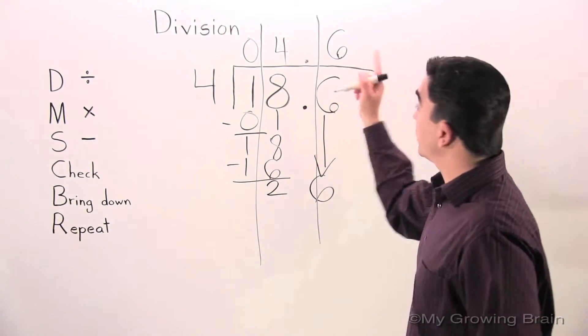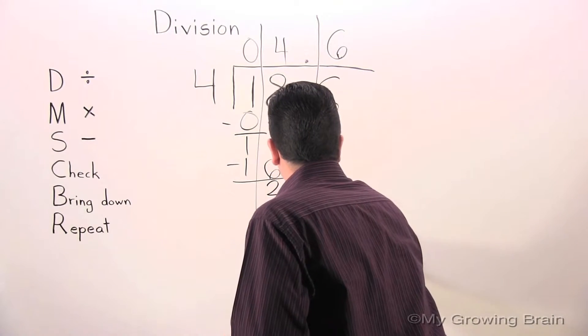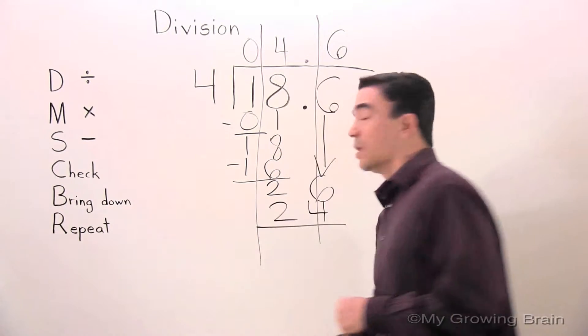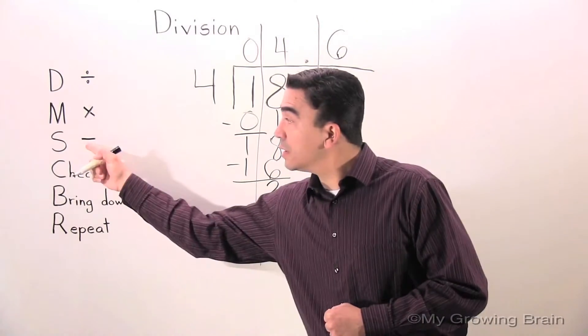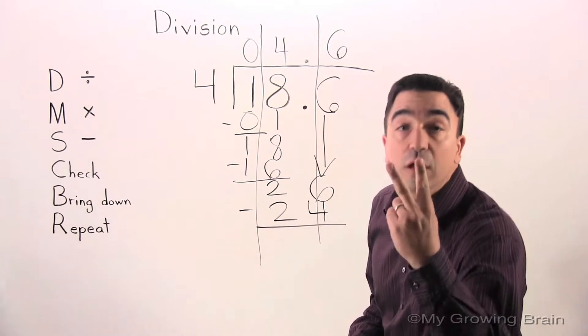Multiply. 6 times 4 is 24. Next step: subtract. 26 minus 24 is 2.